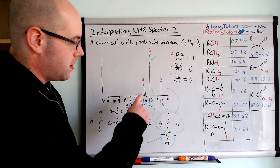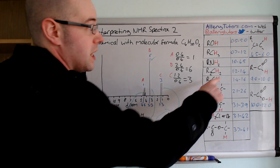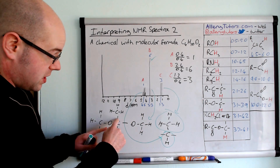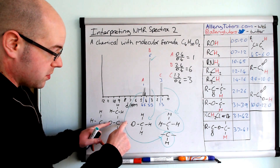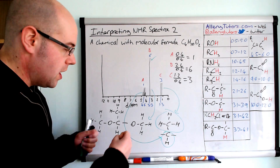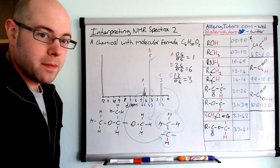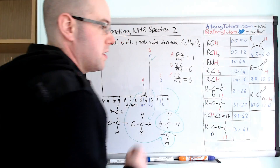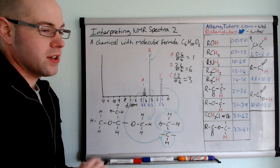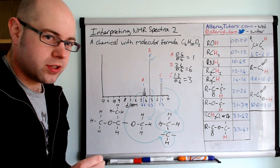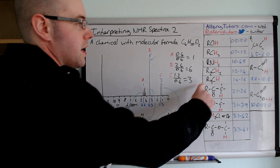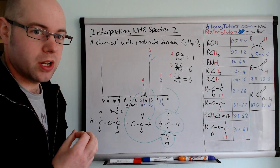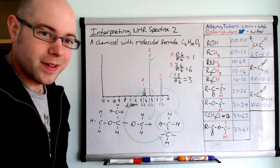One final point: coming back to the peak at 4.6, remember we said it didn't actually fit the alkene category. This proton has shifted so far upfield because it's next to two very electronegative oxygens, which are de-shielding this proton to a large extent, causing it to shift higher outside of its normal shift pattern. So be really careful — don't assume it has a double bond. Always check the molecular formula and refer back to make sure. Hope that helps. Bye.